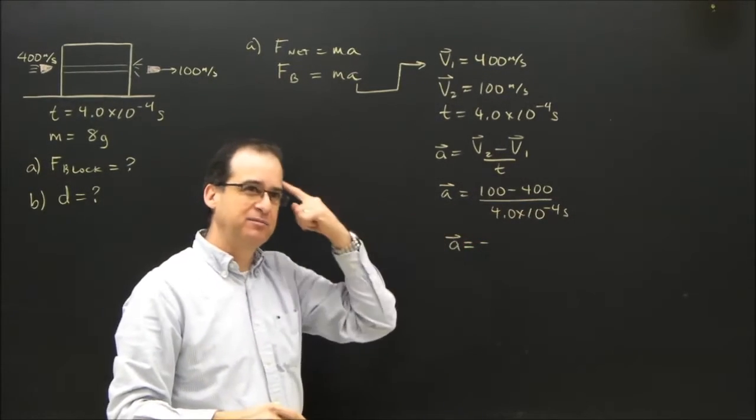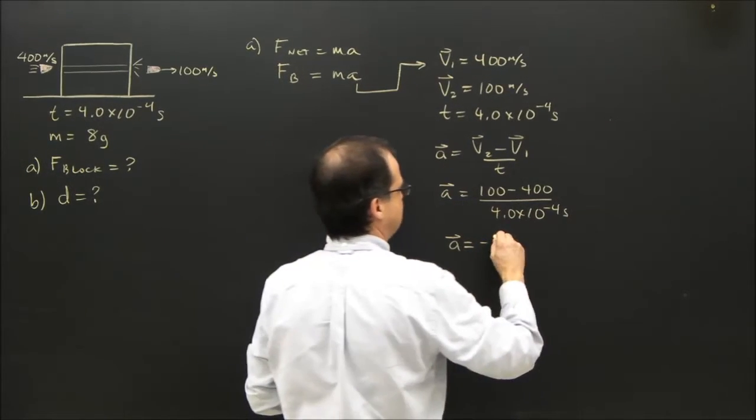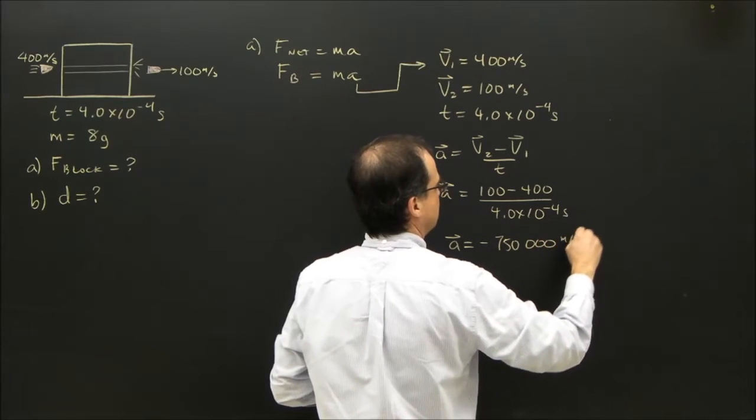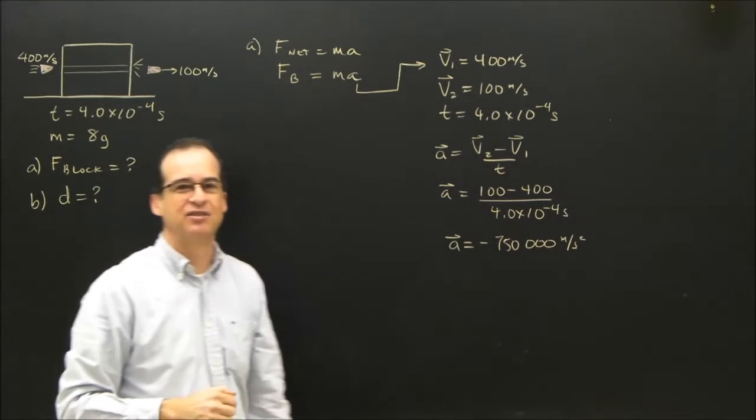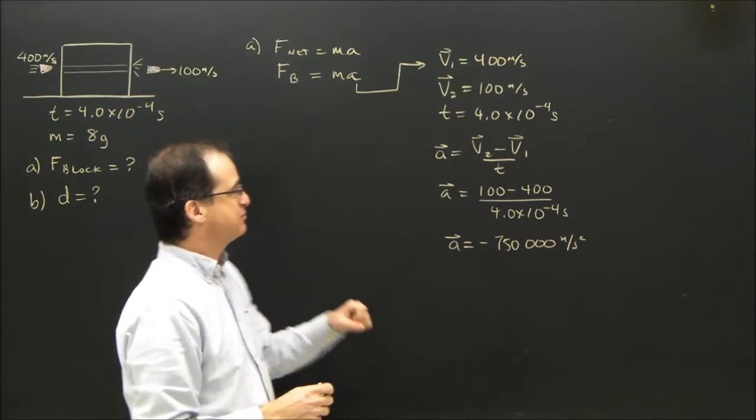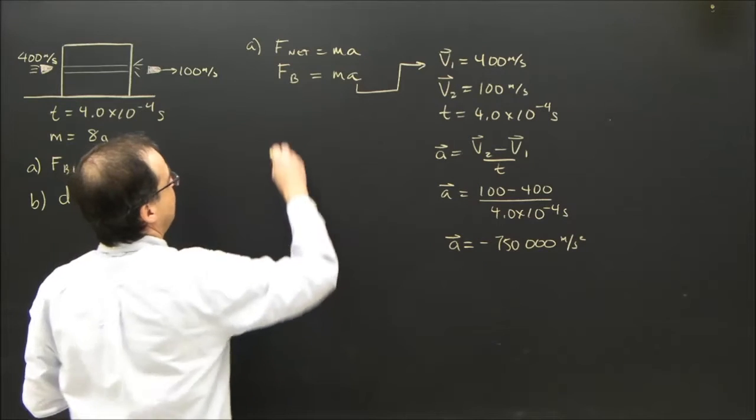And let me do the calculation in my head. Okay. 750,000 meters per second squared. And you can put that in scientific notation, but that will do for now. So it's backwards. Okay. So I can plug that into here.